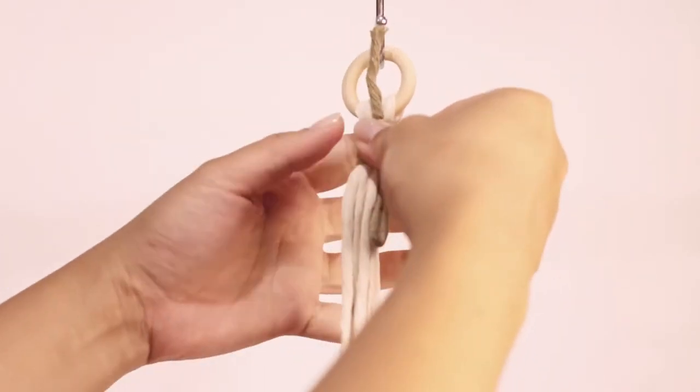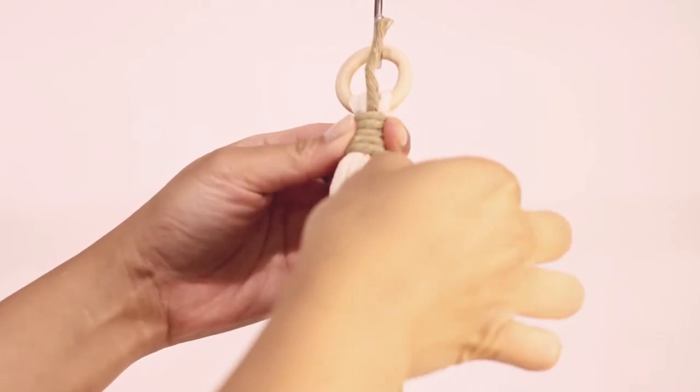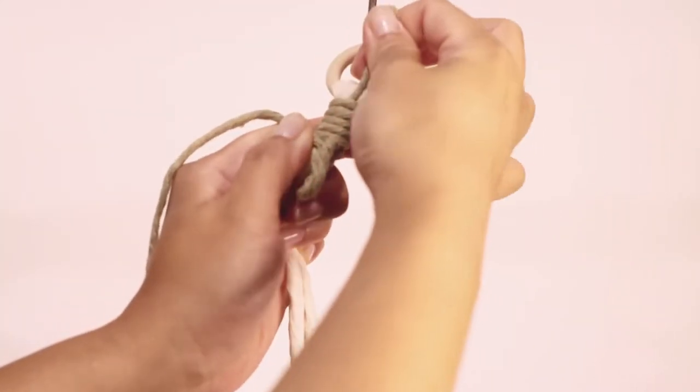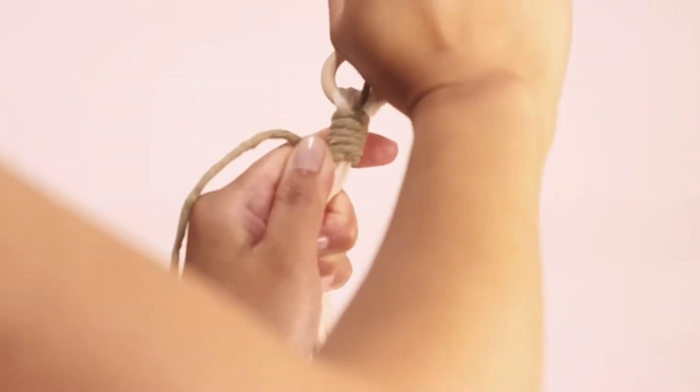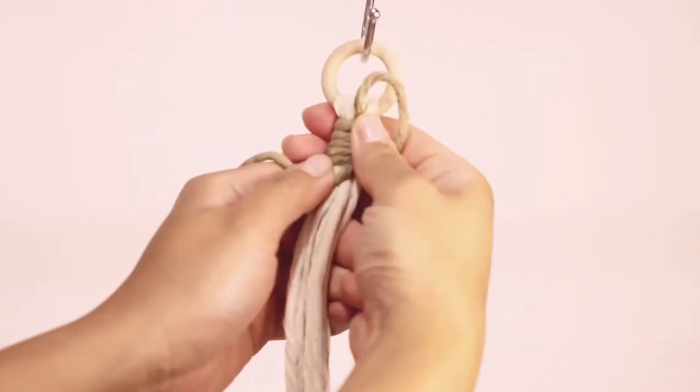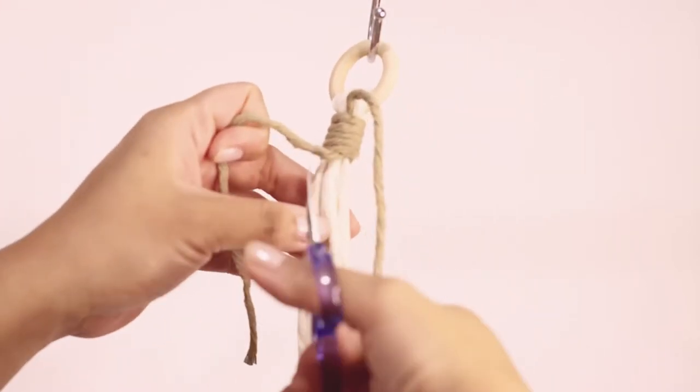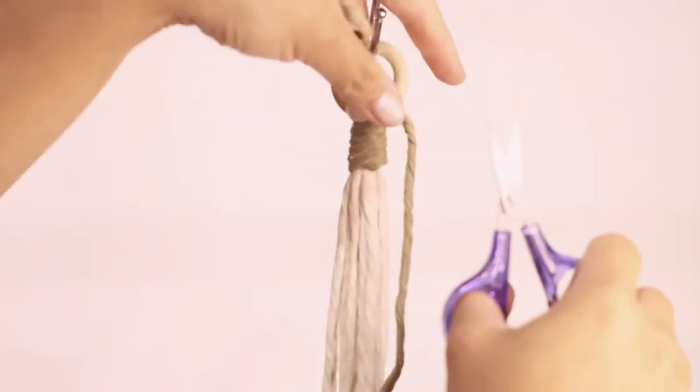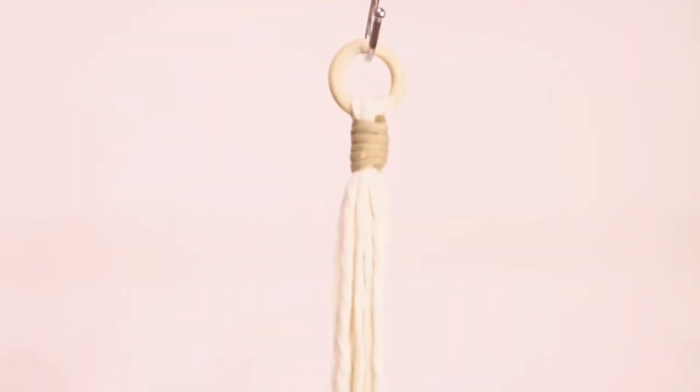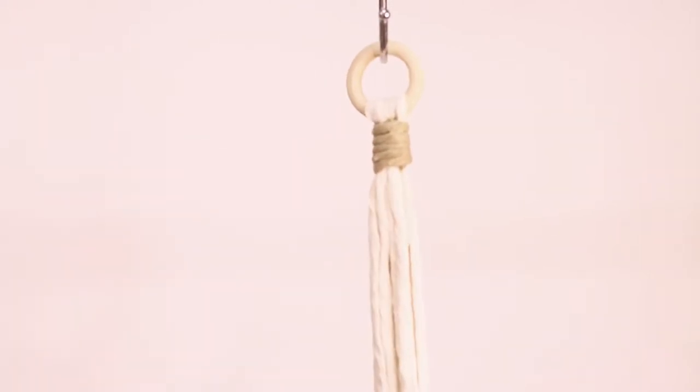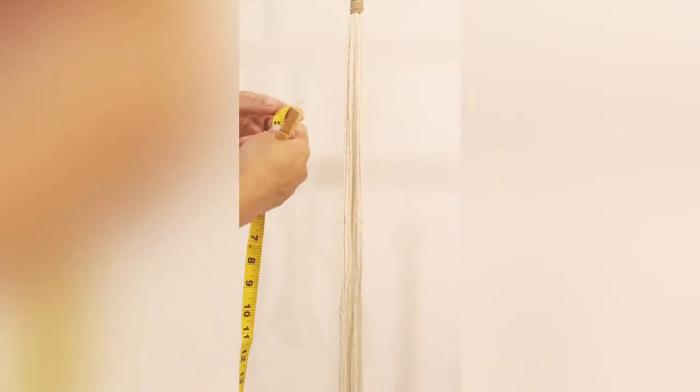Then we'll cut the extra strings and don't forget to tuck in all the edges. Now from the gathering knot that we just made, I'm gonna measure 10 inches and we're gonna make three sets of square knots.